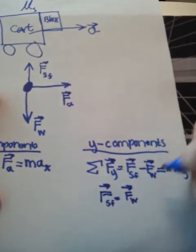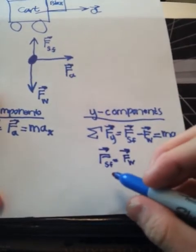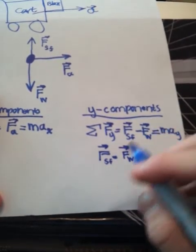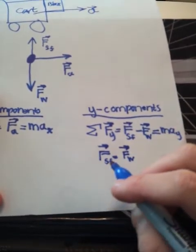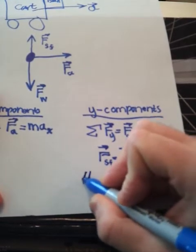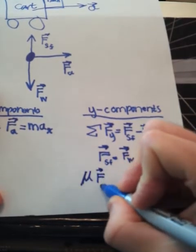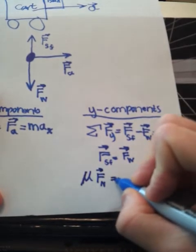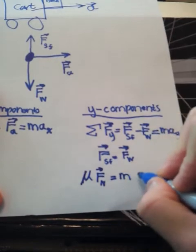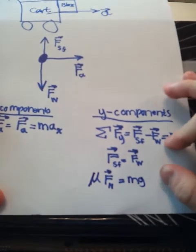That makes sense intuitively because the box is not falling down, so they have to be equal in magnitude. Now, the fundamental definition of friction is: the force of friction equals the coefficient of friction — in this case static friction — times the normal force, which equals the force of weight, which is mass times gravitational acceleration.